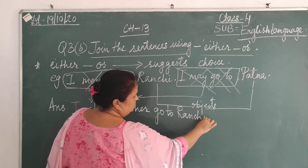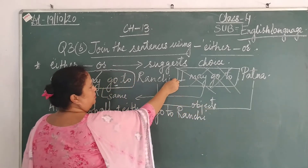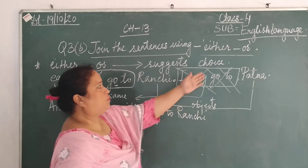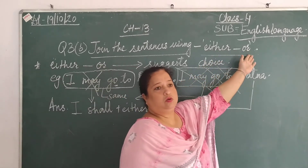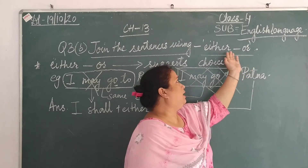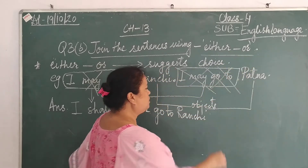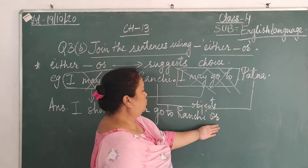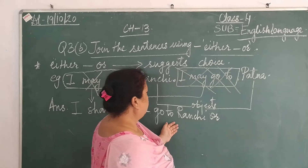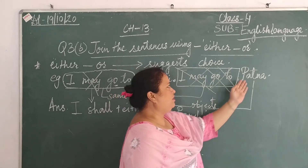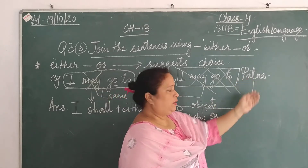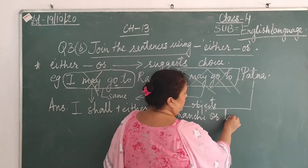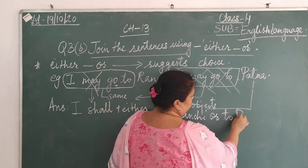Now instead of a full stop, we use the word that goes with 'either,' which is 'or.' Where else can we go instead of Ranchi? We can go to Patna. So the complete sentence is: 'I shall either go to Ranchi or Patna.'